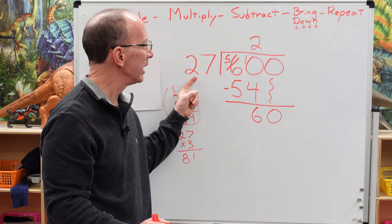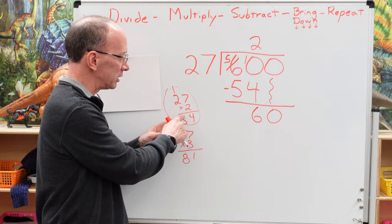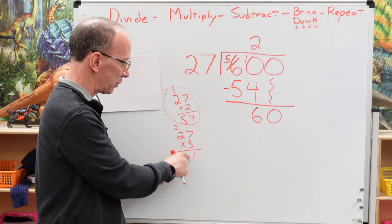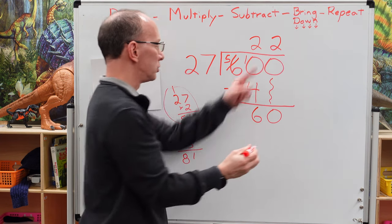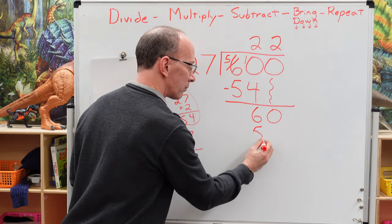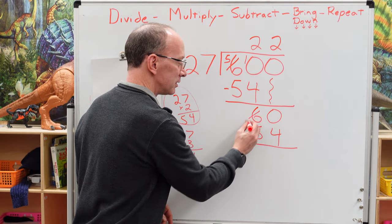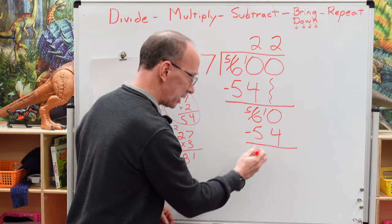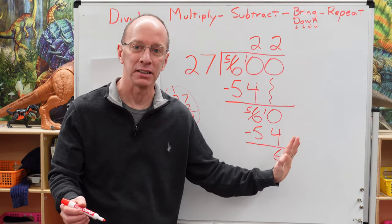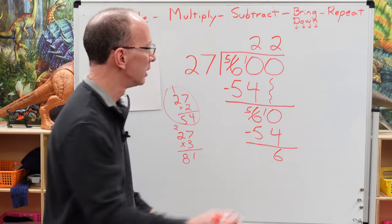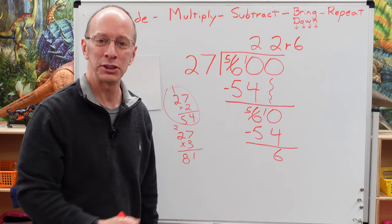Now we have to decide how many times we can put 27 into 60. We know that 2 times 27 is 54, and 3 times 27 is 81 — too much. So we're going to use 2 again. 2 times 27 is 54. Subtract that: 10 minus 4 is 6, and 5 minus 5 is 0. I don't have any more numbers to drop down, so this is our remainder. We put an R right here, and our answer is 22 with a remainder of 6.